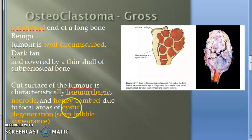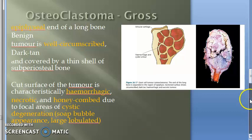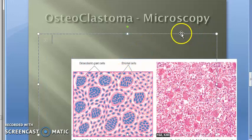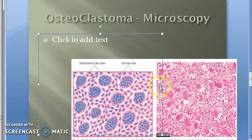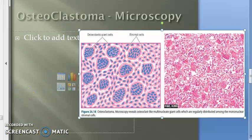There is also a large lobulated osteolytic lesion — lobulated. Shall we move on to the microscopy? Let's look at the microscopy of osteoclastoma. In microscopy, what exactly will you see — this is again going to be at the epiphyseal end.